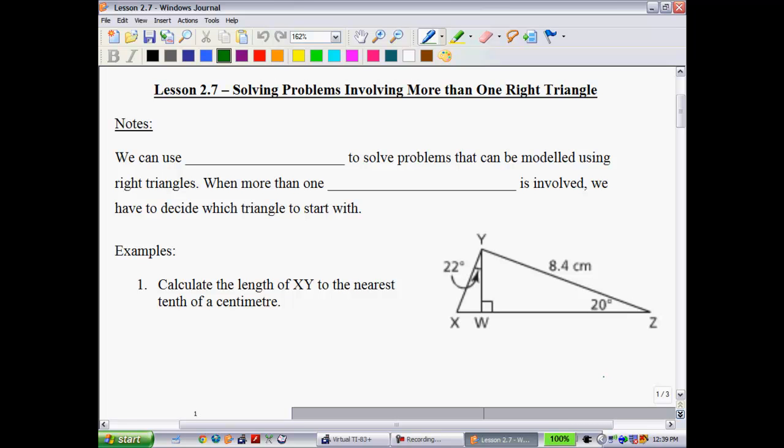Lesson 2.7, Solving Problems Involving More Than One Right Triangle, will be the last lesson of this second unit on trigonometry. So far you've probably found this unit to be fairly straightforward. It's probably one of the easiest ones that we'll actually do all year. This last section pushes students a little bit more though, so you may experience some difficulties.